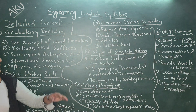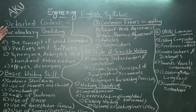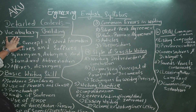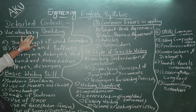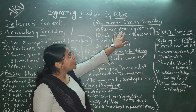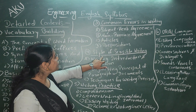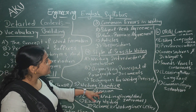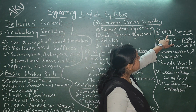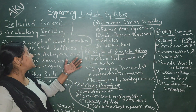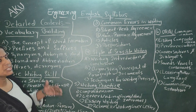There are many detailed contents and I am going to explain them one by one. First is vocabulary building. Second is basic writing skill. Third is common error in writing. Fourth is style of sensible writing. Fifth is writing practice, and sixth is oral communication. Let us study each section one by one.